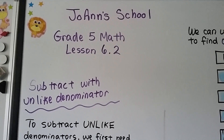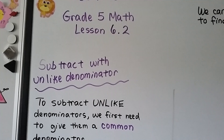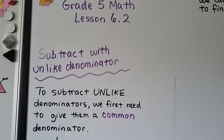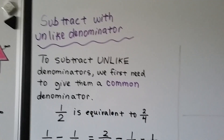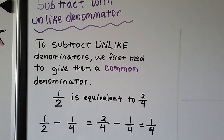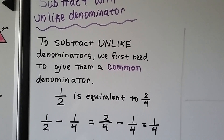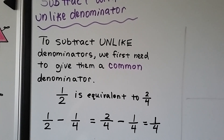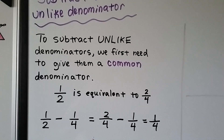This is lesson 6.2 for fifth grade math and we're going to subtract with unlike denominators and we're going to use models. To subtract unlike denominators we first need to give them a common denominator.